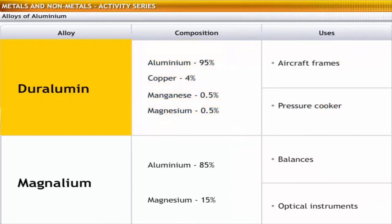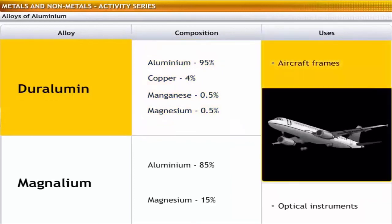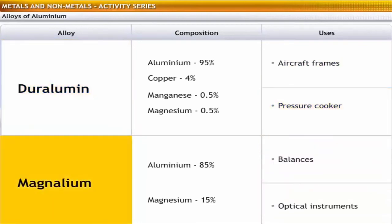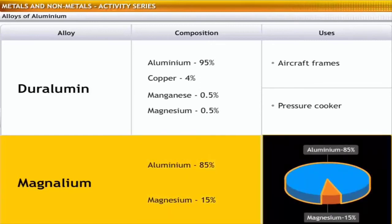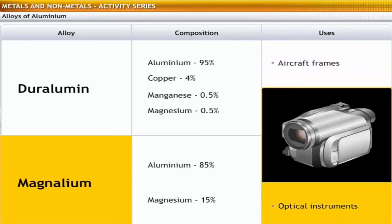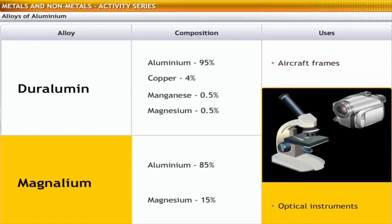Duralumin is widely used in the aircraft industry because of its lightness and desirable physical properties. It is also used in making pressure cookers to withstand high temperatures. Magnalium is an alloy of aluminium and magnesium — although weak and soft in elemental state, magnesium combines with aluminium to produce alloys useful in engineering materials. Magnalium is composed of 85% aluminium and 15% magnesium. It is used in making balances because of its high structural strength and resistance to corrosion, and in making optical instruments like cameras and microscopes due to its light weight and resistance to corrosion.